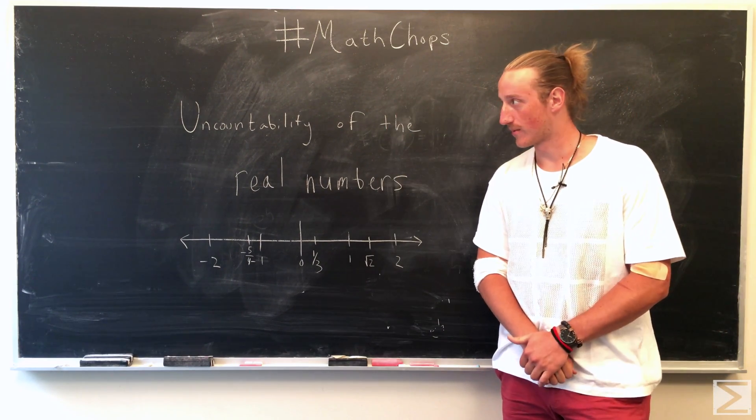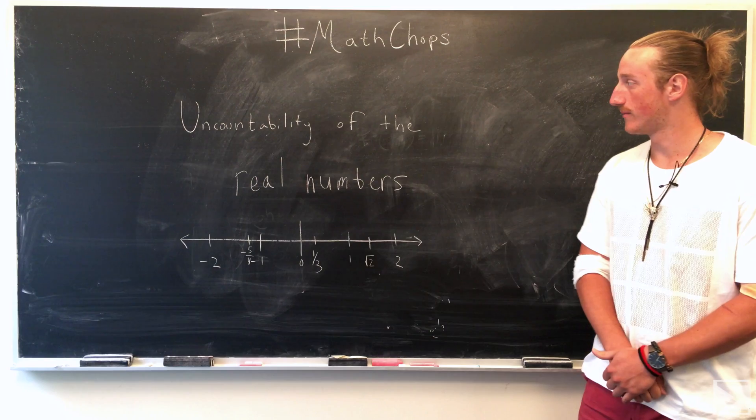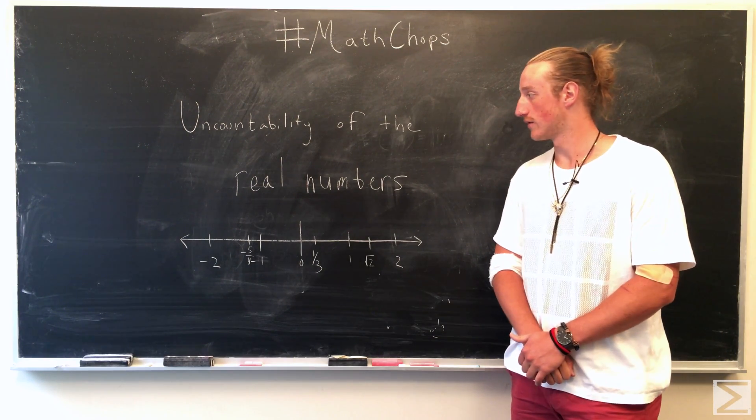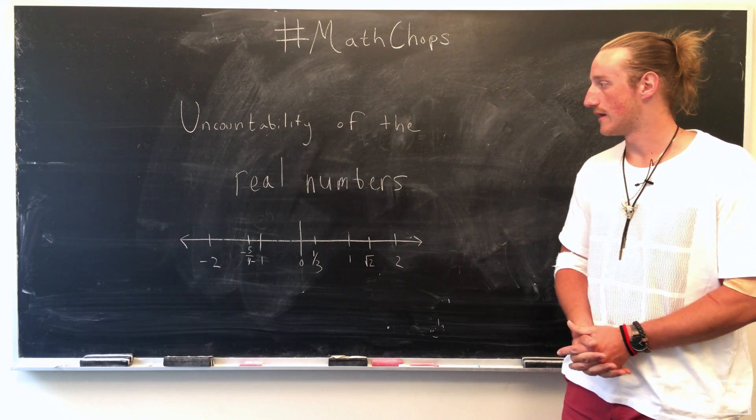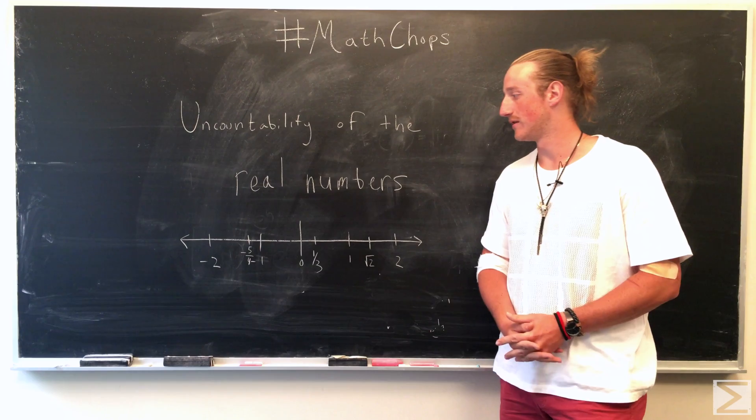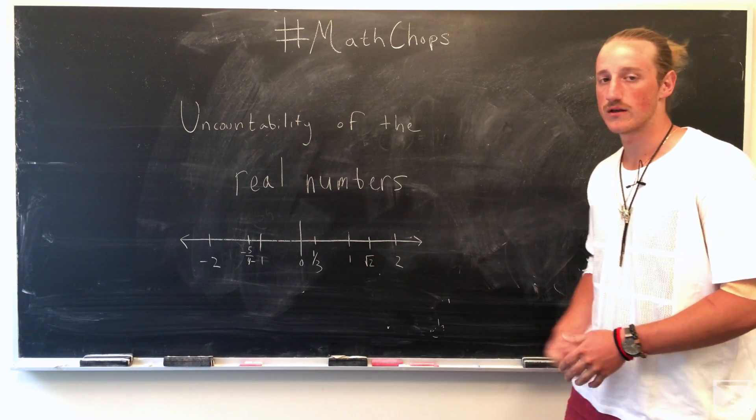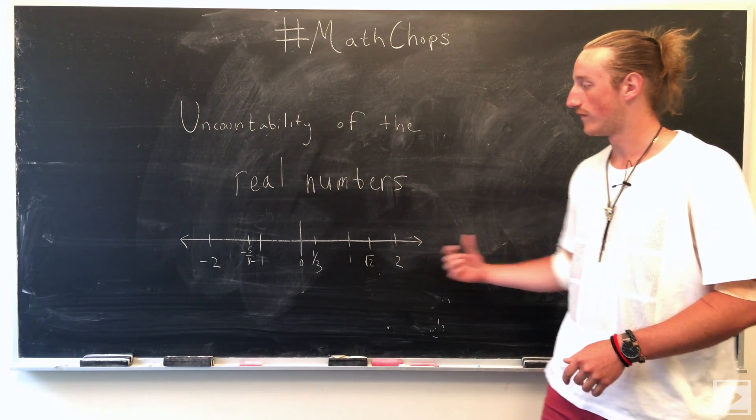We're talking about the proof of the uncountability of the real numbers. And the real numbers are anything that can be shown on a number line, which is a number line that goes to infinity and negative infinity.